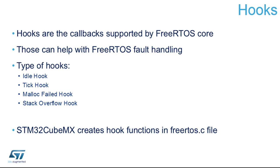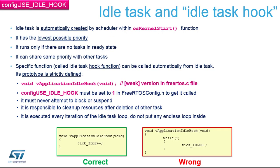CubeMX generates the hook functions in the FreeRTOS.c file, so you can find them there. The first is the idle hook — a very interesting feature. It is entered any time the idle task runs, which happens when all other tasks are blocked and FreeRTOS has nothing else to do. The idle hook should never be blocking or suspending any other tasks, so it should be a pass-through function.